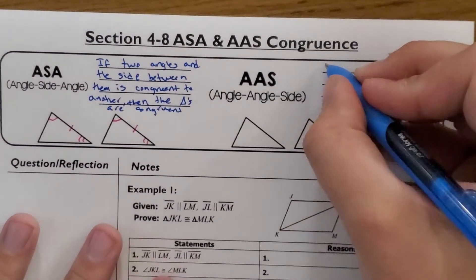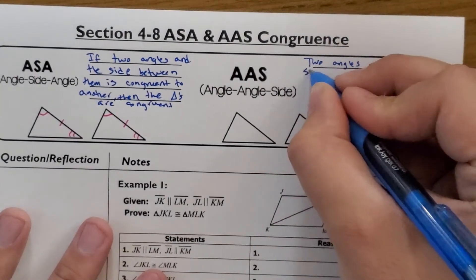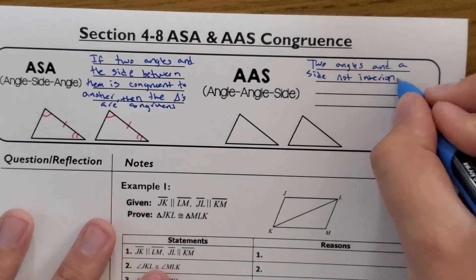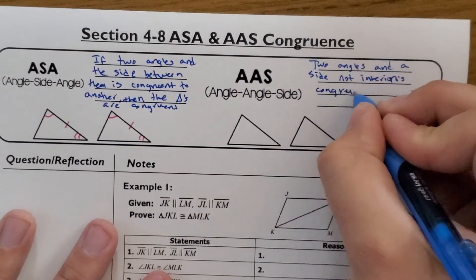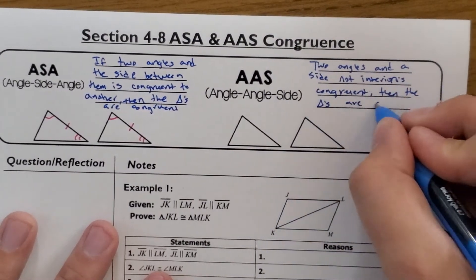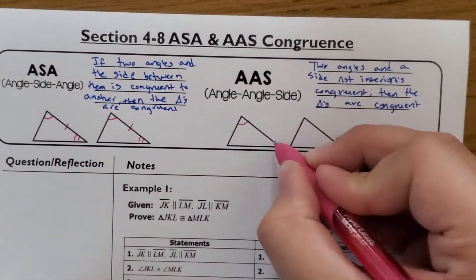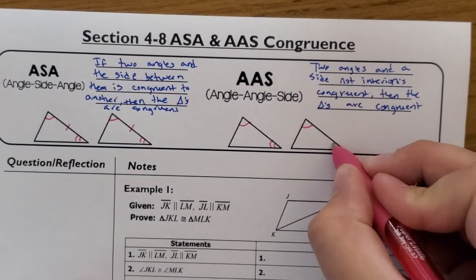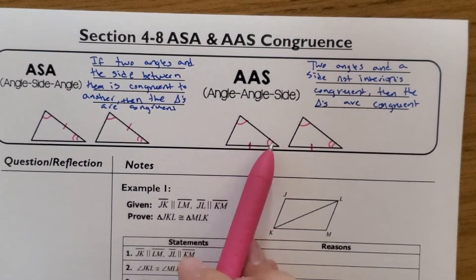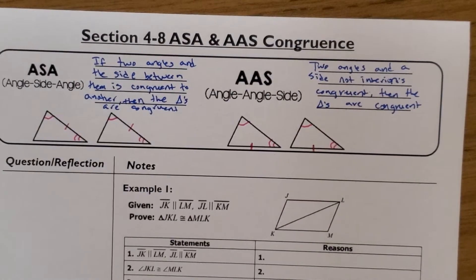Angle-angle-side is very similar, but this time it's two angles and a side that is not interior — not between the two angles. If the two angles and that non-included side are congruent, the triangles are congruent. So maybe this angle and this angle are congruent, but instead of the side being in the middle, it's the side on the bottom — that's angle-angle-side — and it can also prove congruence.